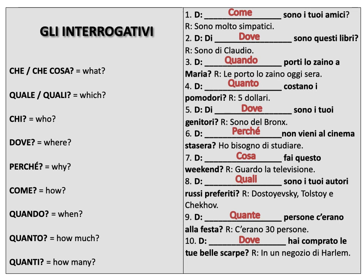So I hope you agree with me that today's topic is very straightforward. Let me pronounce the interrogatives for you again: che, che cosa, or cosa means 'what.' Quale or quali means 'which' — quale is singular, quali is plural. Chi means 'who.' Dove means 'where.' Perché means 'why.' Come means 'how.' Quando means 'when.' Quanto means 'how much.' And quanti means 'how many.'